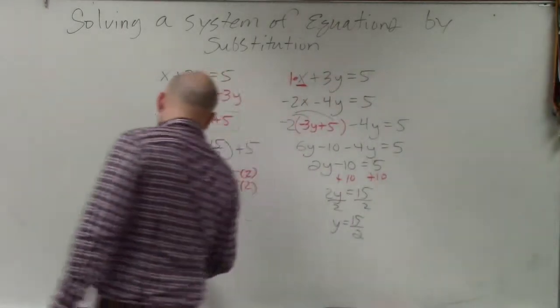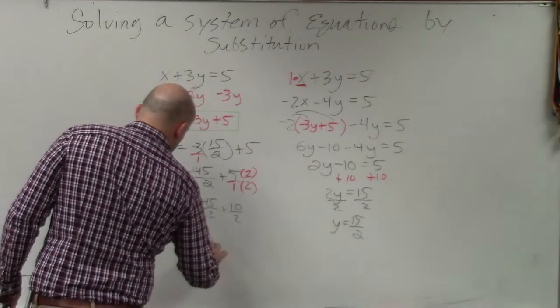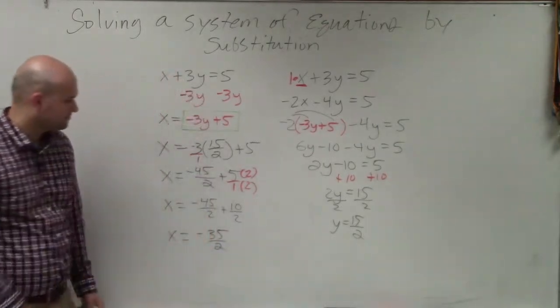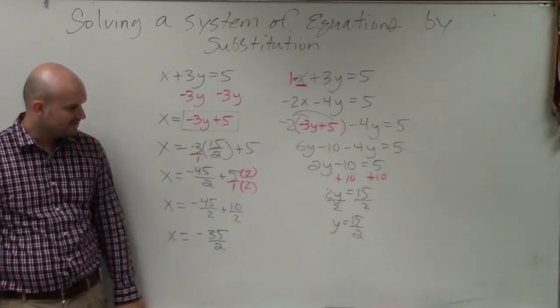And that equals x equals negative 35 over 2, which you can't simplify.